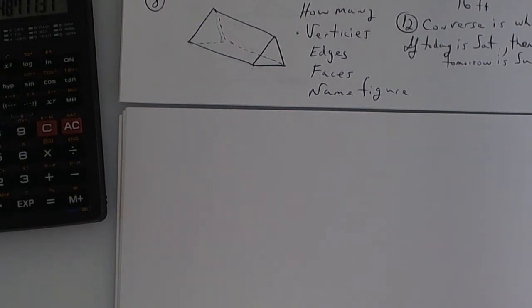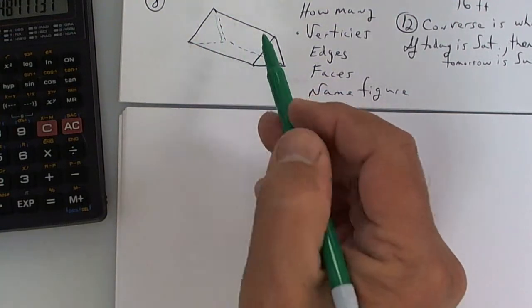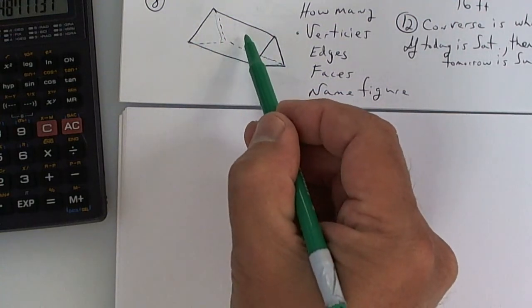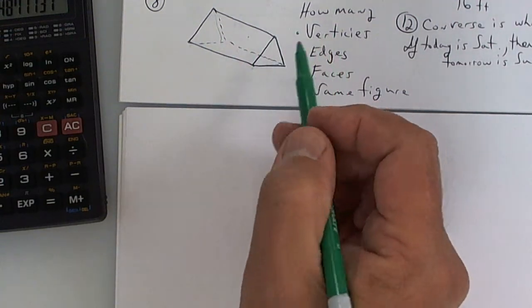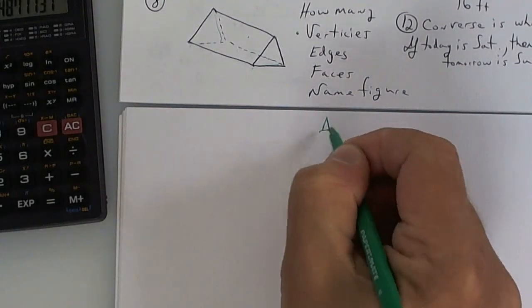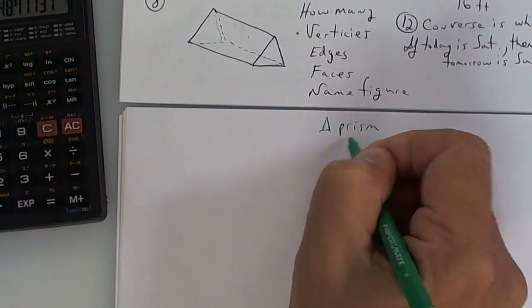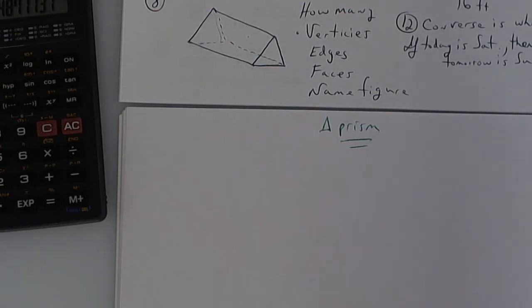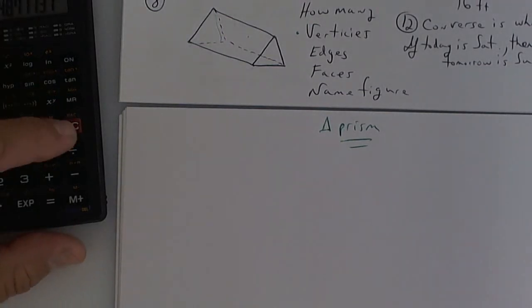Alright. The faces are the flat parts. So look here. You have two triangles, so that's a face. And then you've got three rectangles: 1, 1, 1. So that's 3, 4, 5. You have five faces. Name the figure. It is a triangular prism. If the bases are the same, it's called a prism. If it goes to a point, it's called a pyramid.